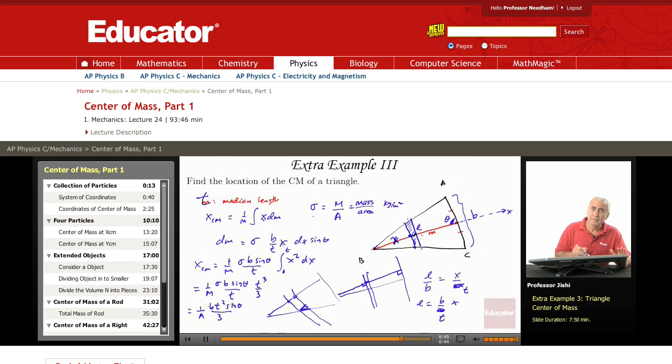But b times t sine theta, where is t sine theta? It's the height. This is t. So the height is t sine theta times b is twice the area. So this becomes twice the area over the area, so you get 2t over 3. So x_cm is 2 times the median over 3. It's 2 thirds the way to the median.